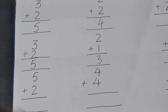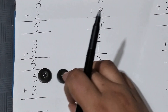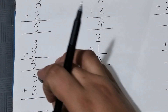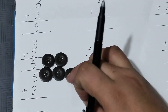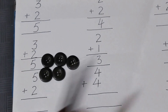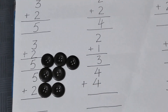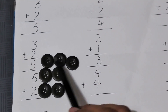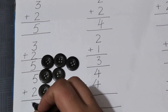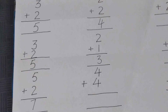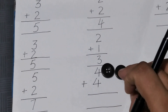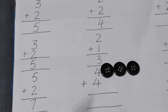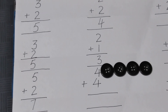Now here is five plus two. One, two, three, four, five — these are five. Plus two — one, two. Now count how many total buttons there are: one, two, three, four, five, six, seven. The answer is seven.